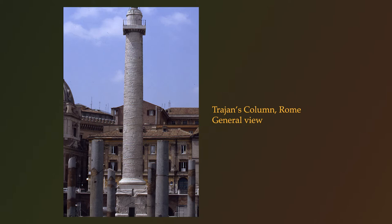Trajan knew that he needed to deal with Decebalus once and for all if he was to secure Roman control in that region. So in 101 AD he launched the first of his Dacian campaigns and succeeded in defeating Decebalus, who was forced to give up some of his territories but allowed to keep his throne. It wasn't long before Decebalus seized the opportunity to fight back, and in 105 he himself invaded Roman territory, starting the second Dacian War. Trajan's forces prevailed and Decebalus committed suicide.